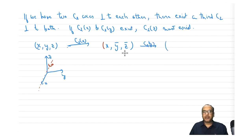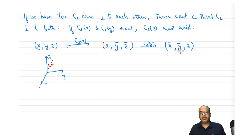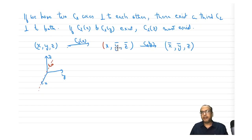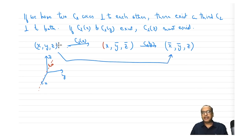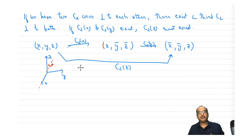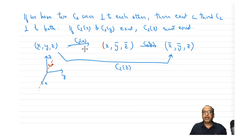Now applying C2y: x goes to −x, −y remains as −y, and −z goes to +z, because the y-axis is fixed and x and z change sign. Looking at the net result from (x, y, z) to (−x, −y, z): x changes sign, y changes sign, and z remains — which is exactly the C2z operation. Thus we have shown that if two perpendicular C2 axes exist, a C2 axis perpendicular to both must also exist.